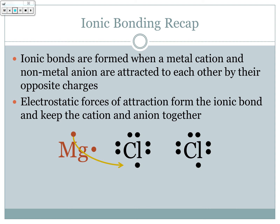So one of them is going to go with one chlorine atom, and the other one will be donated to the other chlorine atom. So now you have a magnesium that has lost two electrons, and two chlorines that have each gained one electron. Since magnesium has lost two electrons, it becomes magnesium 2+. Chlorine, since it has gained one electron, becomes chlorine 1−.